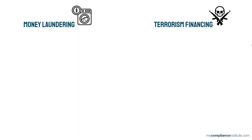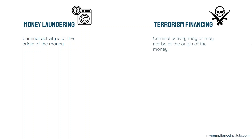Another difference is that for money laundering, criminal activity is at the origin of the money, and that's the whole purpose of it. In the case of terrorism financing, criminal activity may or may not be at the origin of the money. In some terrorism financing cases, the money used was legally obtained.